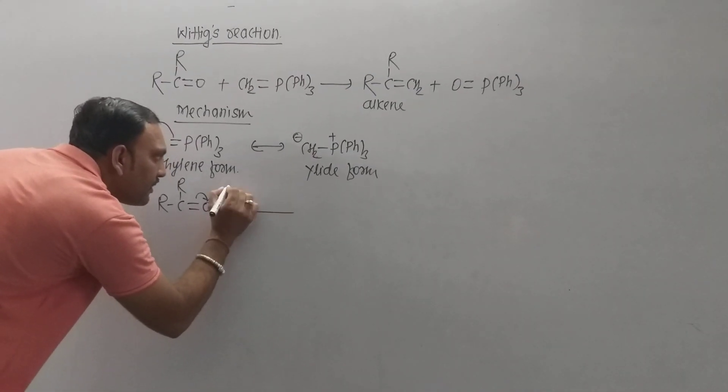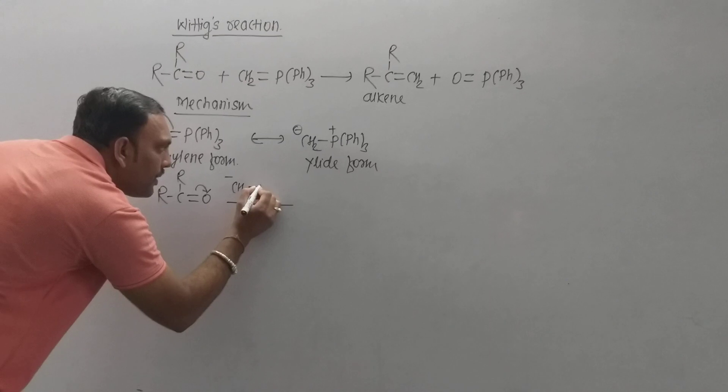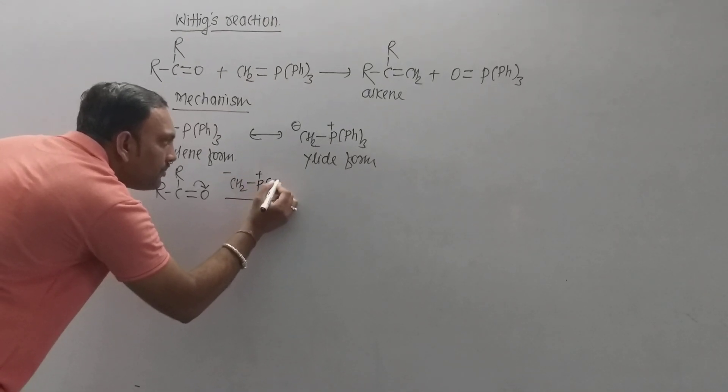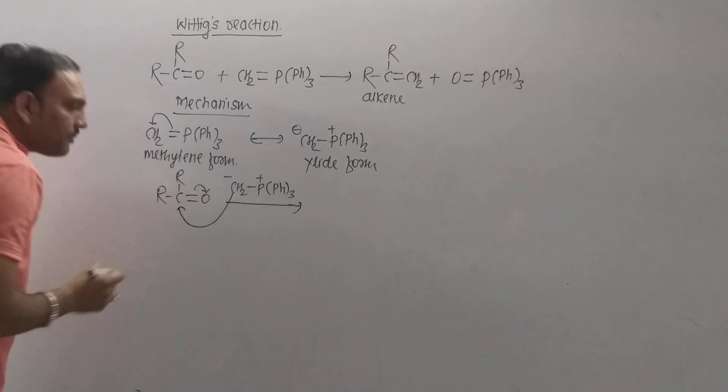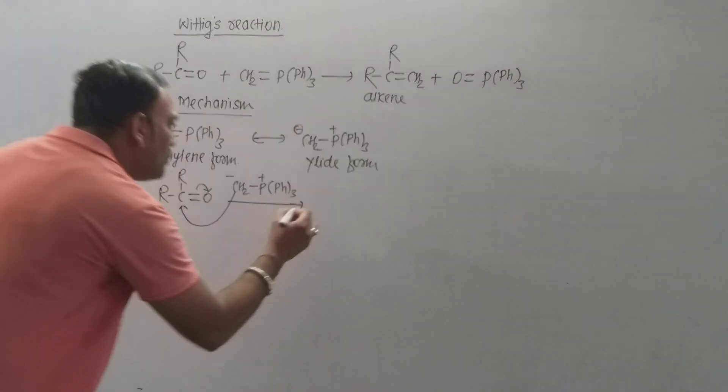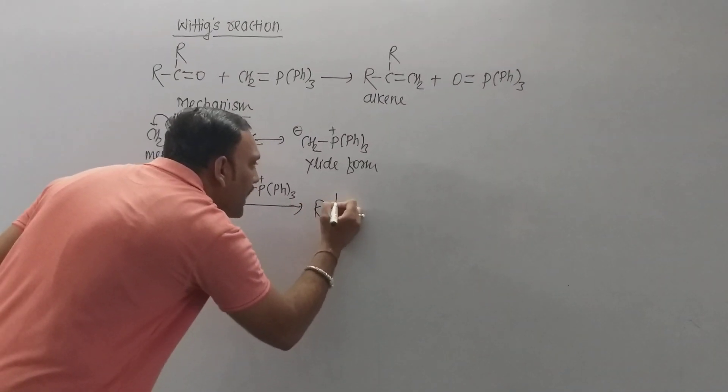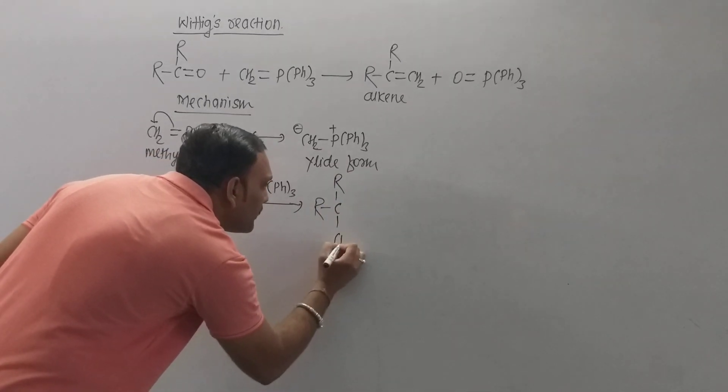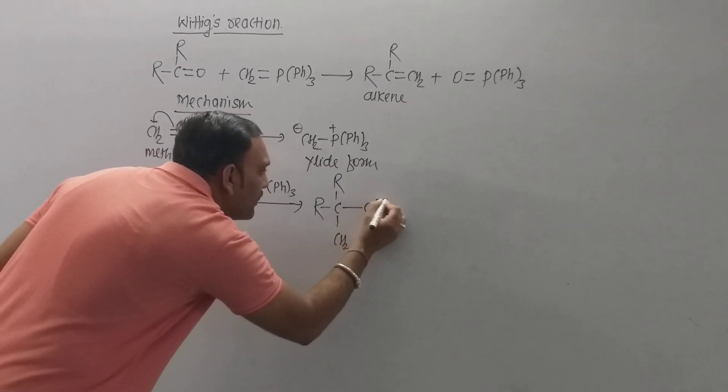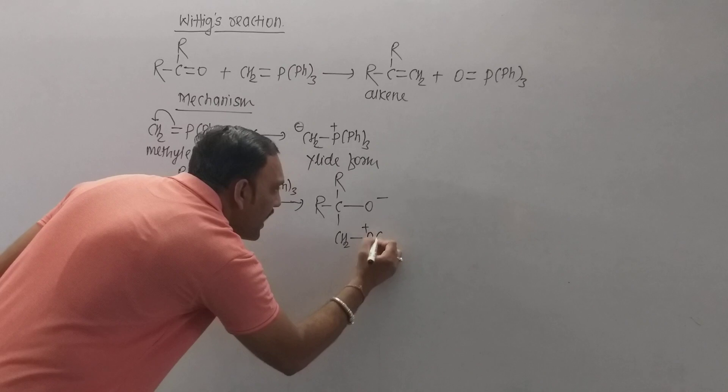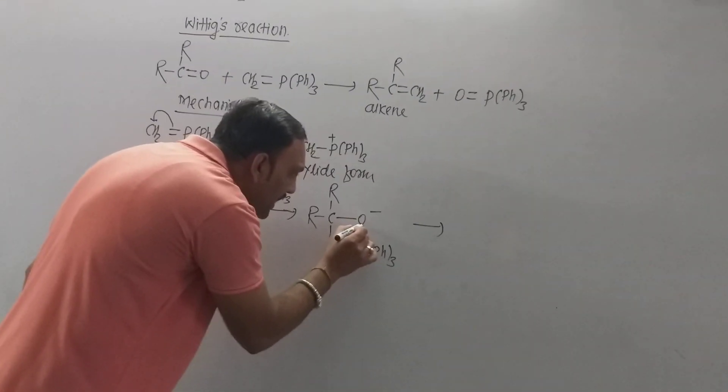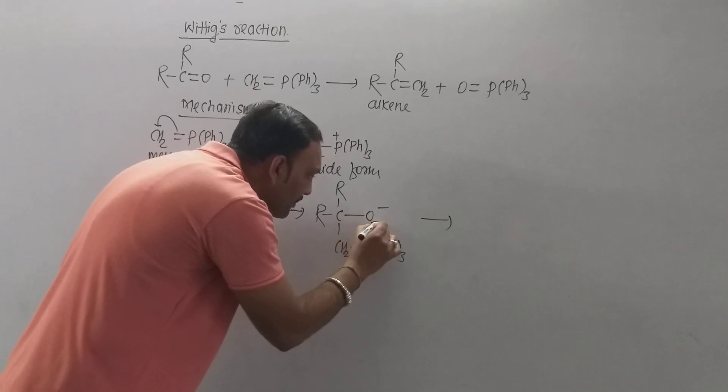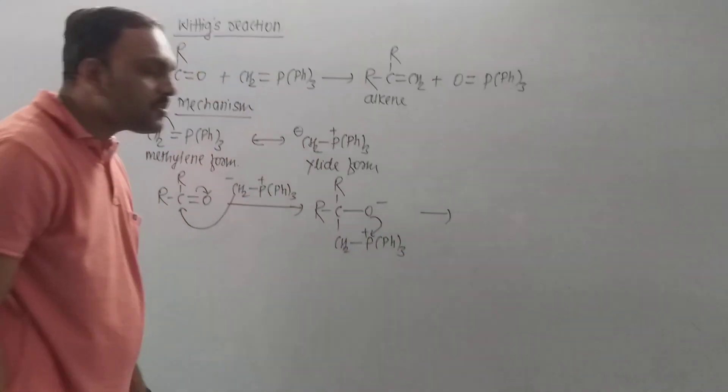this carbon appears negative. So our ketone, in which the carbonyl group happens to be polar, ultimately this negative carbon of the ylide form tends to attack on this carbon, which leads to the formation of an intermediate that can be represented as shown. Now at this point, this negatively charged oxygen tends to attack on phosphorus.